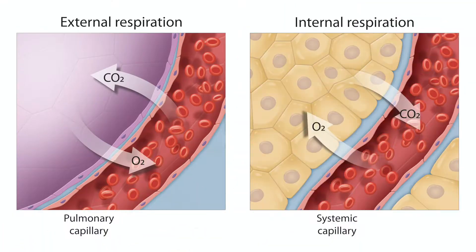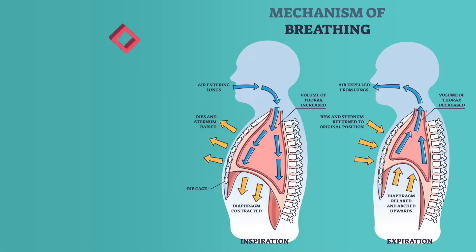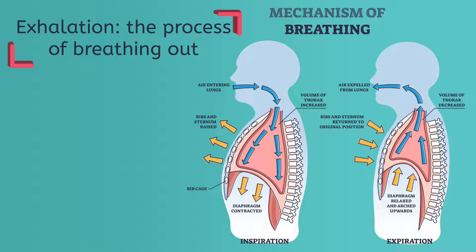After giving the cells their oxygen and removing their carbon dioxide waste, the deoxygenated blood returns to the alveoli of the lungs. As we noted earlier, in the alveoli, oxygen is dumped into the bloodstream while carbon dioxide is removed. At this point, we breathe out to expel the carbon dioxide and other unneeded gases we originally inhaled from the air. This process is called exhalation.